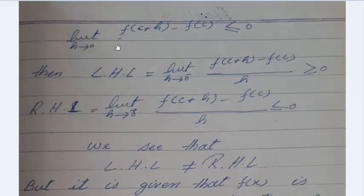Limit h approaches 0 from the left: [f(c+h) - f(c)]/h. Then left hand limit as h approaches 0-: [f(c+h) - f(c)]/h ≥ 0.